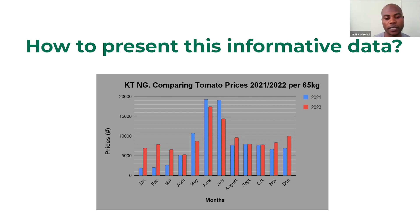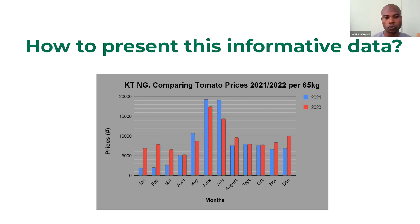Some of the farmers understood that it is good to not produce within January to March, which is why the price is a bit better than 2021. The same thing from May to July — the price is a bit low because, based on this information, some farmers decided to produce tomato within this month. That is why the price dropped a little compared to 2021. This means that the farmers are benefiting and East West Seed KT is creating awareness among farmers.